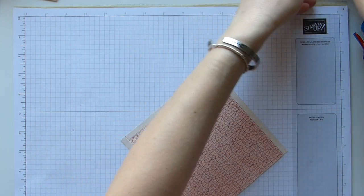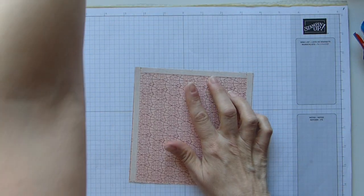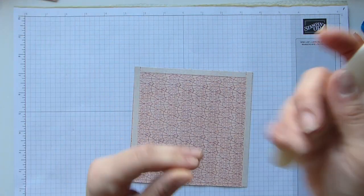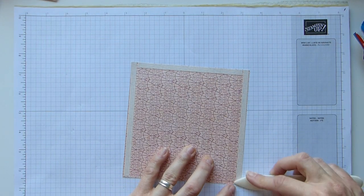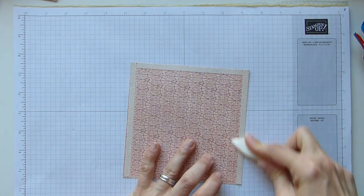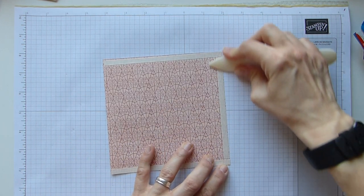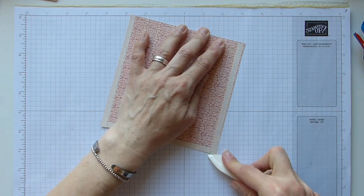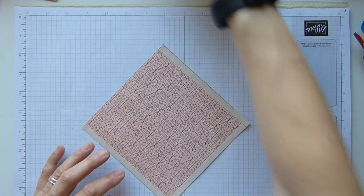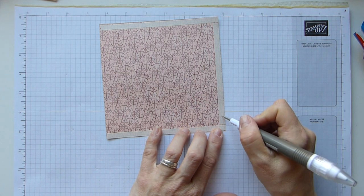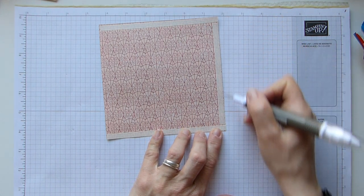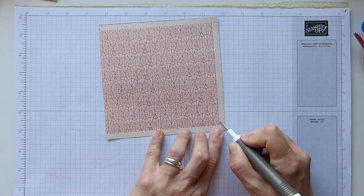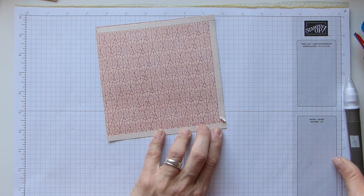I'm getting my bone folder because I just want to make sure that's really well stuck. I'm running over all of the tear and tape. Once you've done that, take the middle piece off. This is a little bit fiddly.